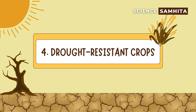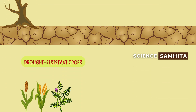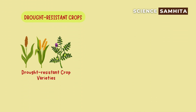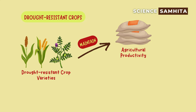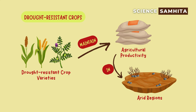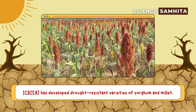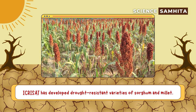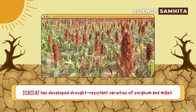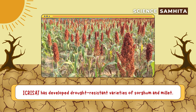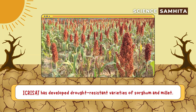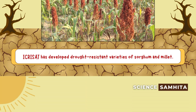Fourth, drought resistant crops. Planting drought resistant crop varieties helps maintain agricultural productivity in arid regions. For example, ICRISAT has developed drought resistant varieties of sorghum and millet.